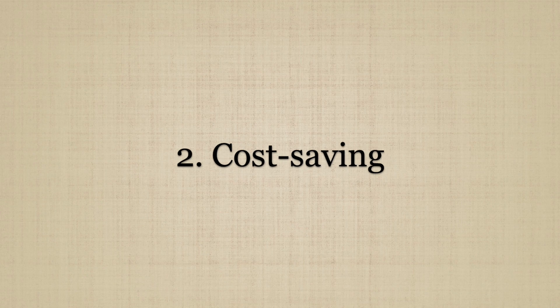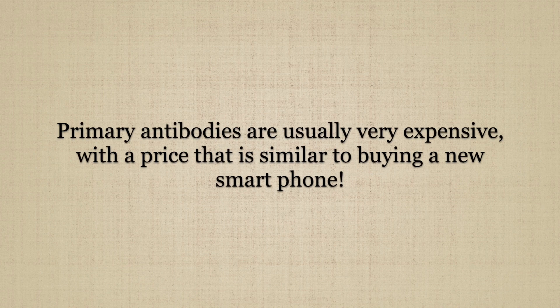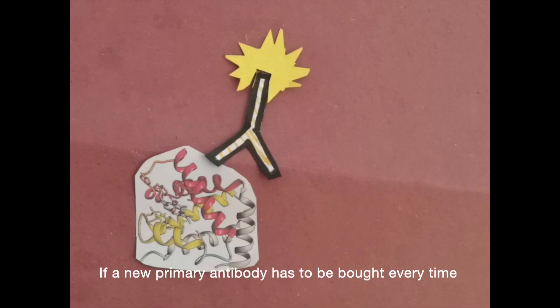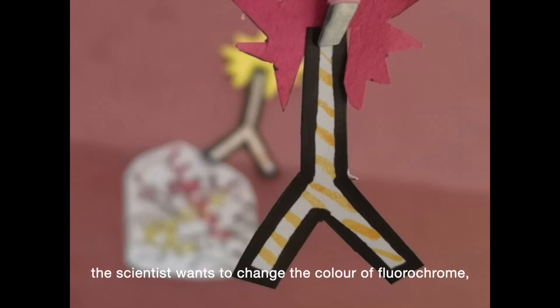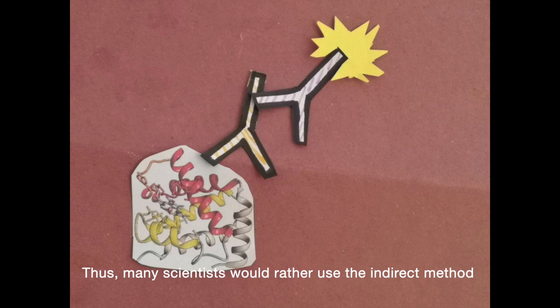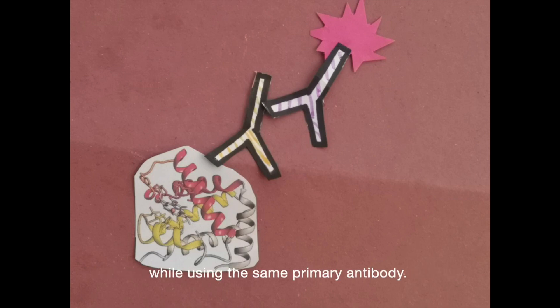The second reason is that the indirect method is more cost-saving. Primary antibodies are usually very expensive, with a price that is similar to buying a new smartphone. If a new primary antibody has to be bought every time the scientist wants to change the color of fluorochrome, it would be costly. Thus, many scientists would rather use the indirect method because they only need to vary the secondary antibody while using the same primary antibody.